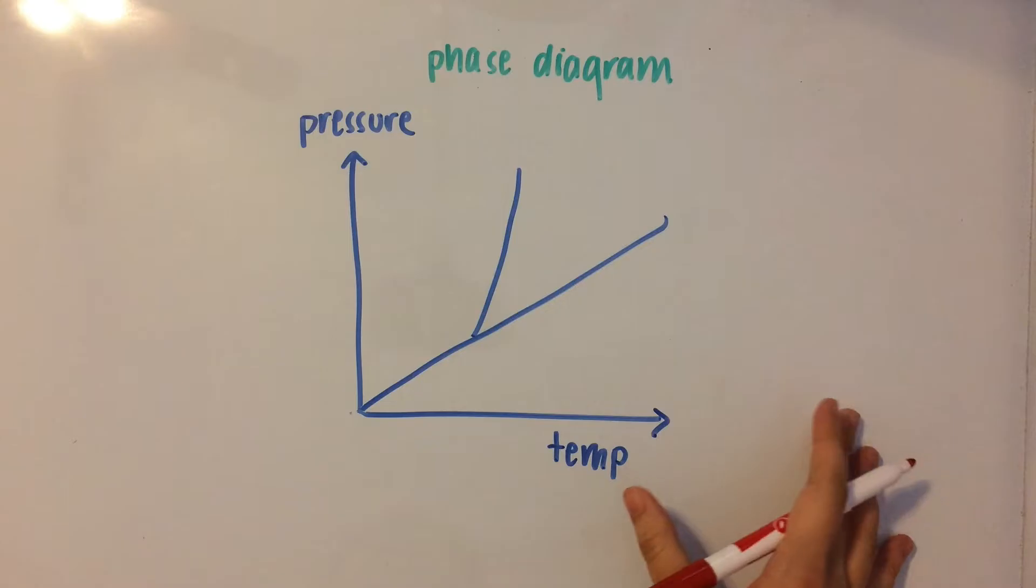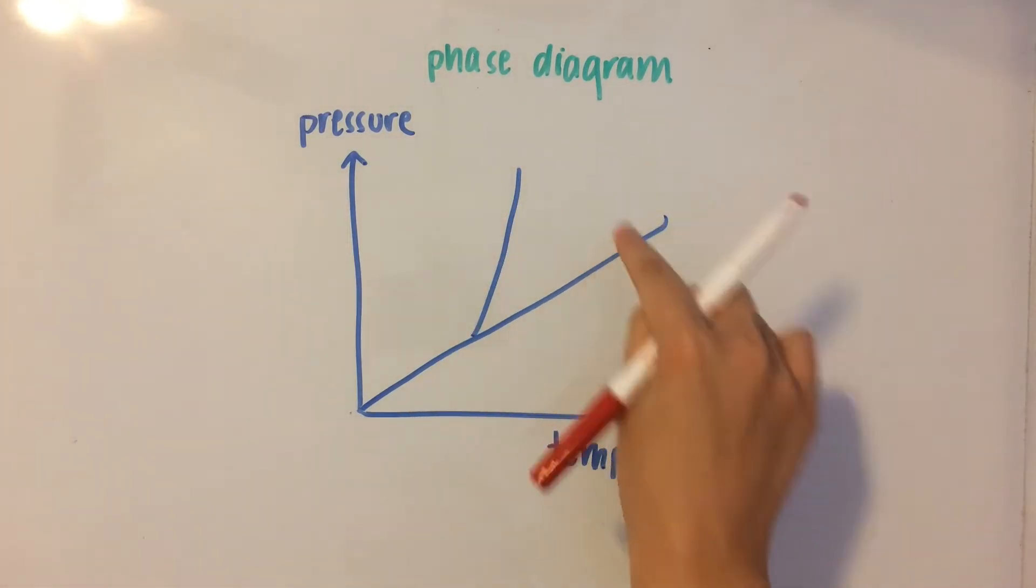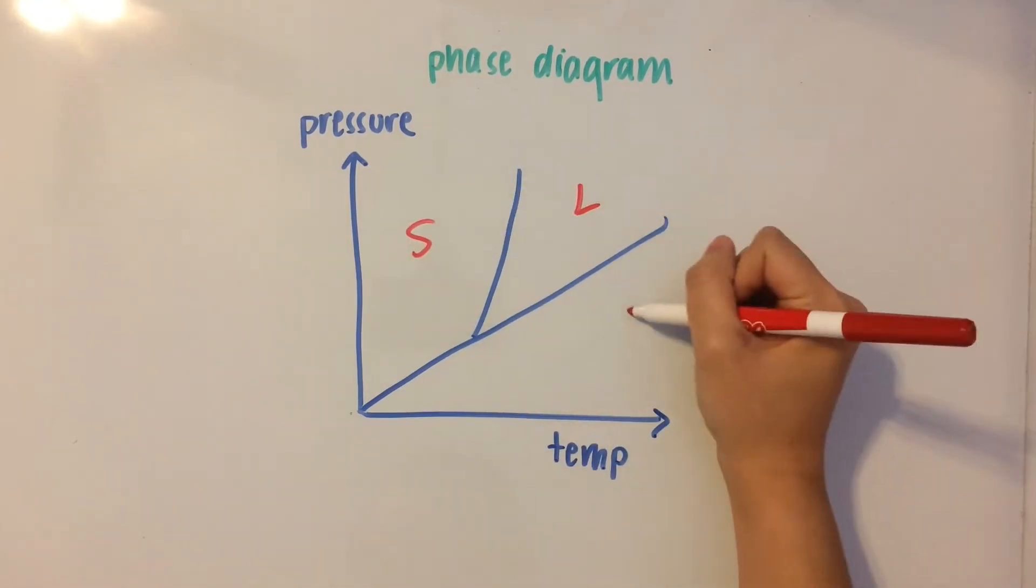So, one of the only things that you need to remember is that a phase diagram is divided into three parts, and these are solid, liquid, and gas.